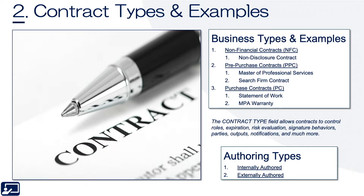It's worth noting that there are really two types of authoring: internally authored and externally authored. Internally authored means somebody in our organization has authored the contract — pulled the terms, edited those terms, gone back and forth with the supplier, done the authoring process inside Fusion. Externally authored is often referred to as supplier paper, but you could also have a contract pulled in a Word template, authored internally, sent out to the supplier, and then uploaded into the contract record.